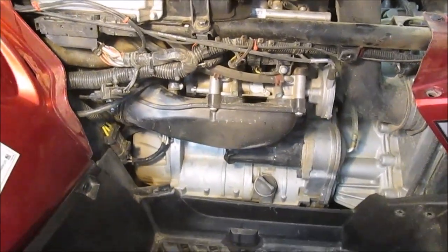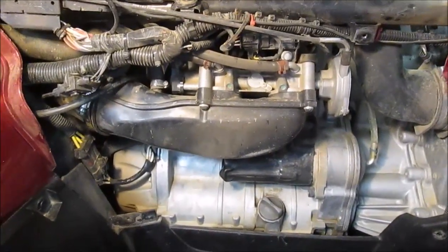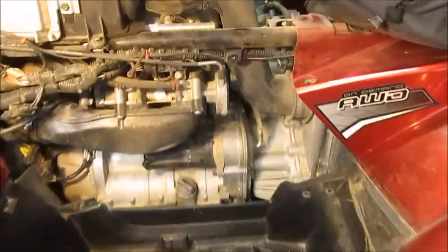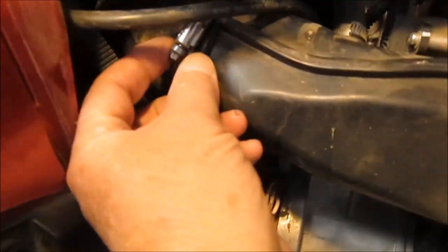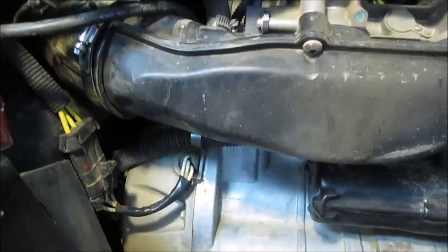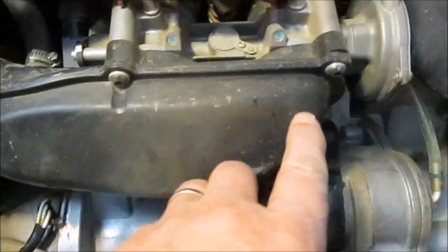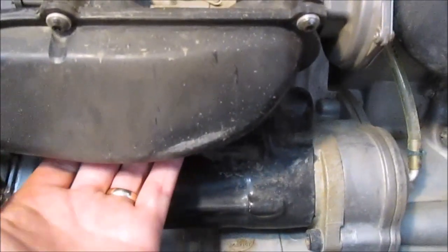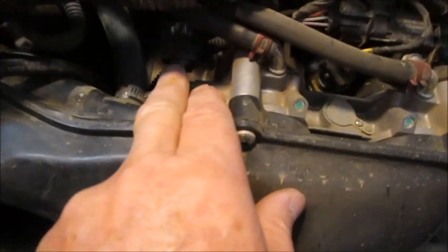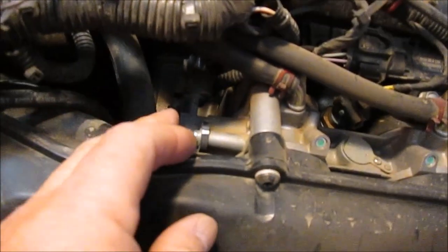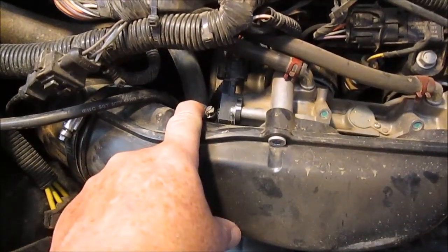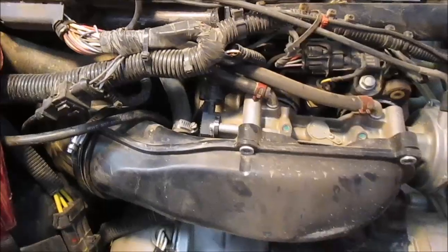To get access to the TPS from the Polaris Sportsman XP850, you have to remove the seat and the two side panels. And you need to loosen this clamp around the air intake box connection, and then remove these screws. There's a couple underneath that hold this throttle body assembly in place. There's the TPS right back there. Almost forgot, you also have to remove the clamp and that hose from the air intake.